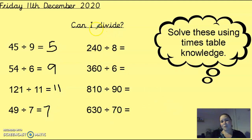And then these ones, you're just going 10 times bigger. So 240 divided by 8, I'm going to think of 24 divided by 8, which is 3, but I started 10 times bigger, so my answer is 10 times bigger. Same with this one. 360 divided by 6. 36 divided by 6 is 6. The question was 10 times bigger, so the answer is 10 times bigger.